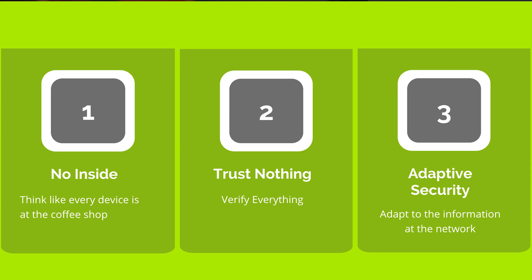Everything must prove its trustworthiness. Number three: security will need to adapt in real time. Security policies must be dynamic so that they can change based on insight from data sources. For example, should a device become compromised, the policies that allow it to communicate with other devices should dynamically change and isolate that device.